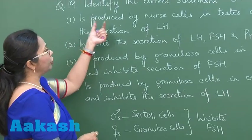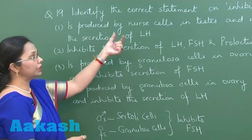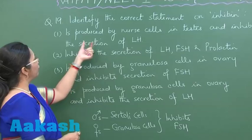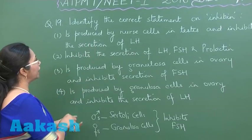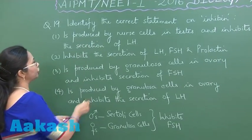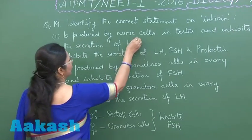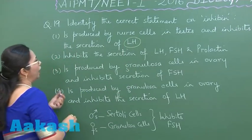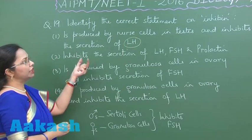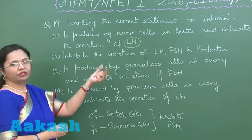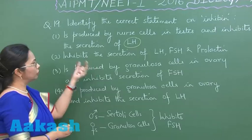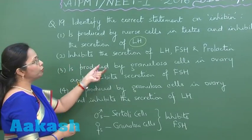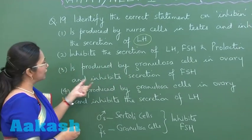The first choice states that inhibin is produced by nurse cells (Sertoli cells) in the testes — that part is correct — but then it says it inhibits secretion of LH, which makes it wrong. The second choice says inhibin inhibits secretion of LH, FSH, and prolactin, which is totally wrong.